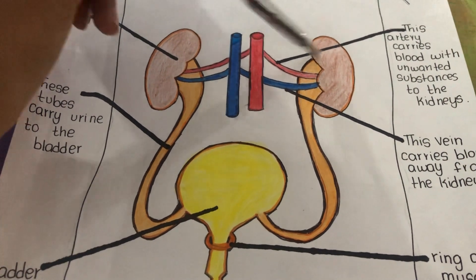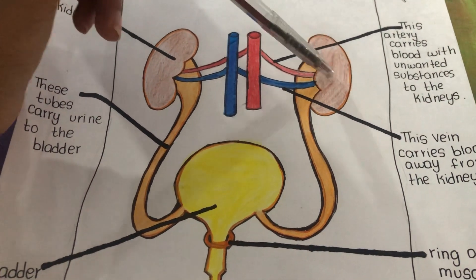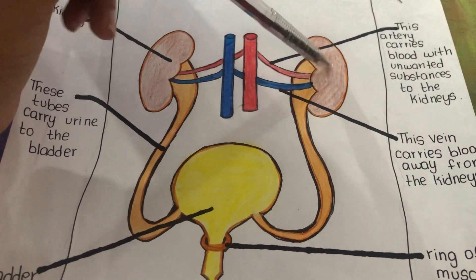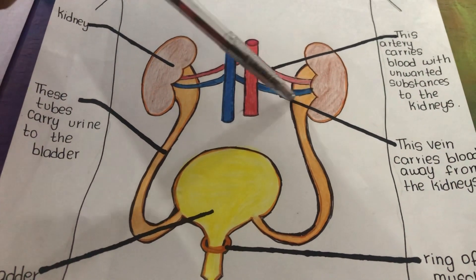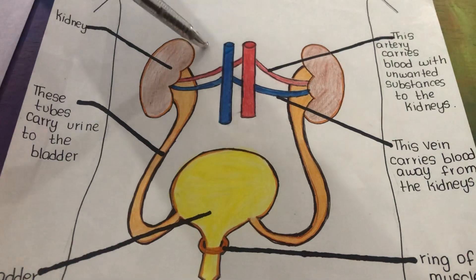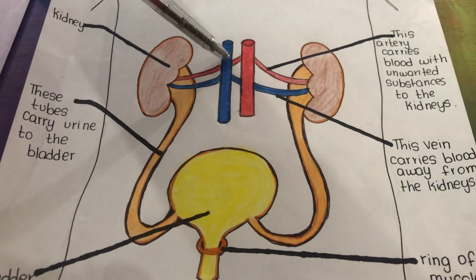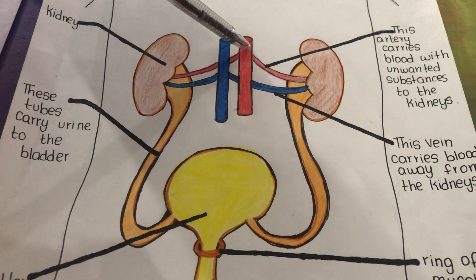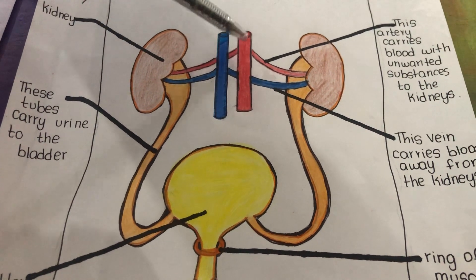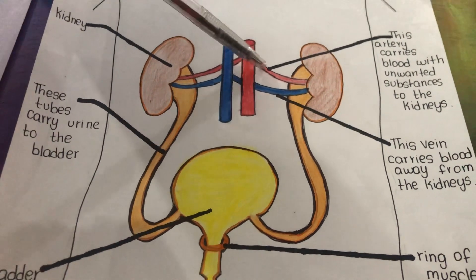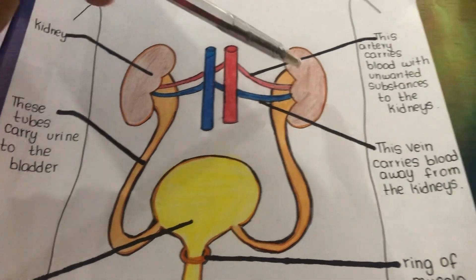This artery is bringing molecules and substances to the kidney. Once the substances are being purified or separated, the vein takes away the purified blood from the kidney. The blood that is not purified contains harmful nitrogenous substances.